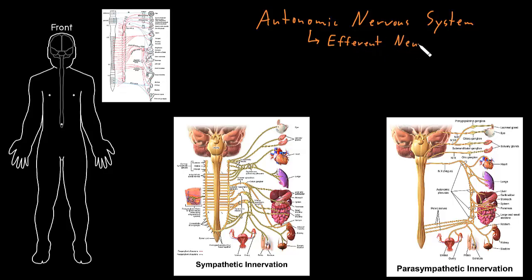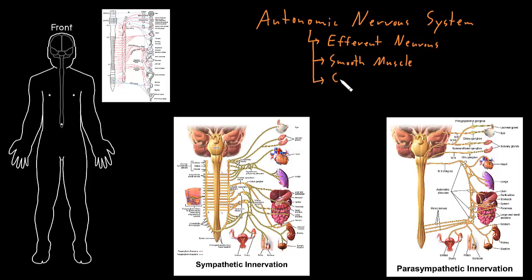These are efferent neurons, and they control three different types of cells. The first are smooth muscle cells, which are in all sorts of structures all over our body, like around our blood vessels. They also control cardiac muscle, the muscle that makes up our heart tissue. These muscle tissue types are different than skeletal muscle, which is controlled by lower motor neurons, not autonomic neurons.